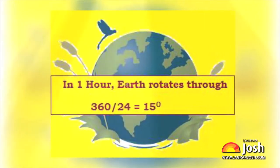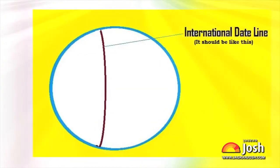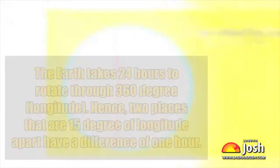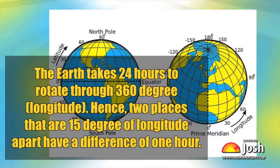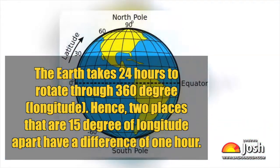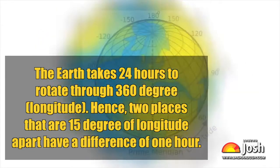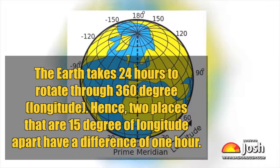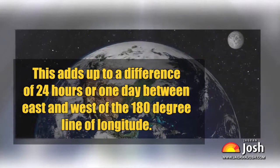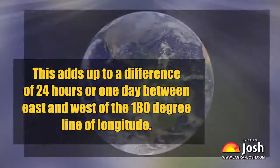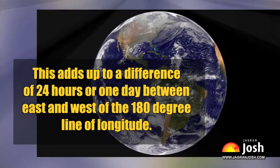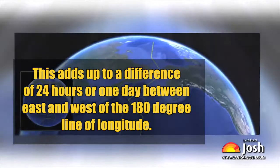Next, let's understand how we determine the time and date of a place. The earth takes 24 hours to rotate through 360 degrees. Hence, two places that are 15 degrees of longitude apart have a difference of one hour. We all know that the sun rises in the east and sets in the west. This adds up to a difference of 24 hours, or one day, between the east and west of the 180-degree line of longitude.